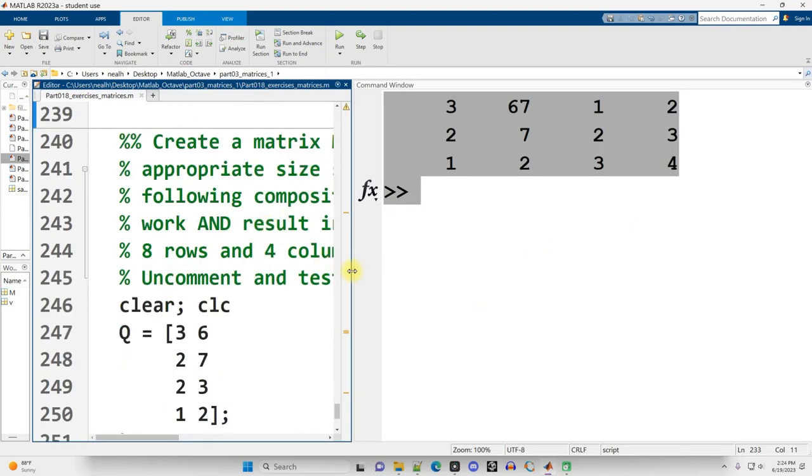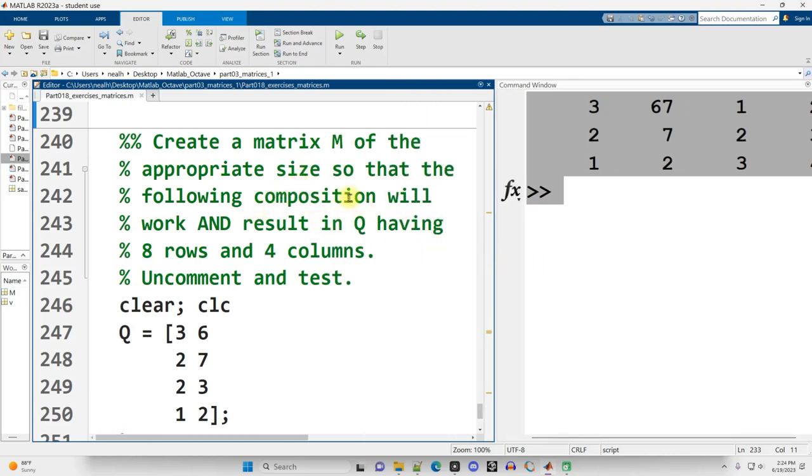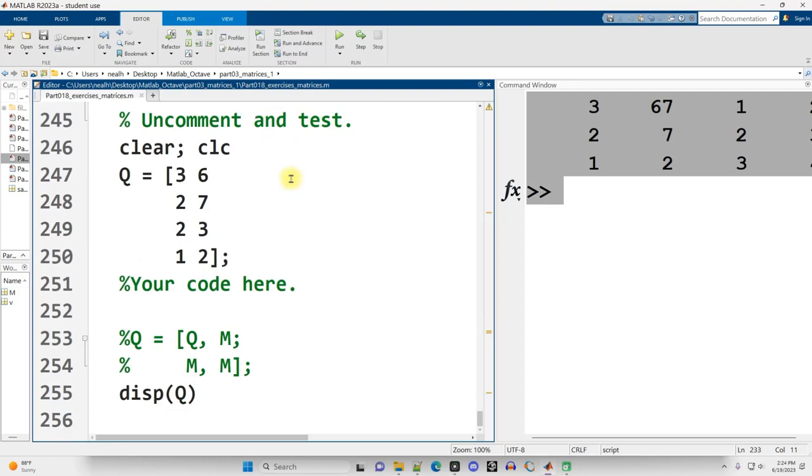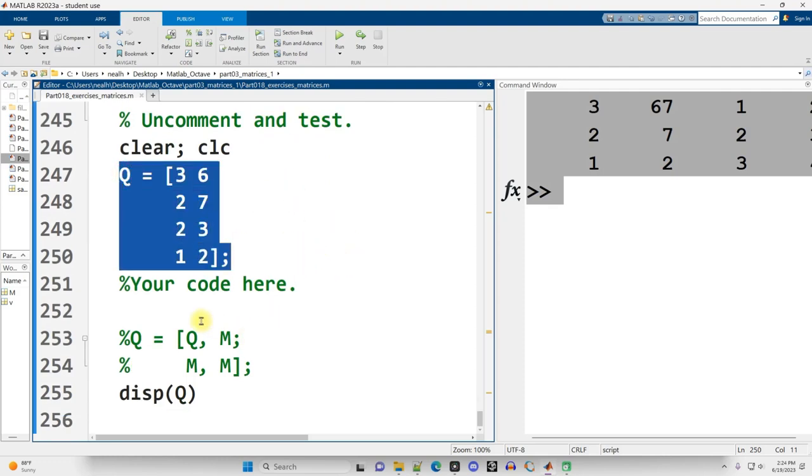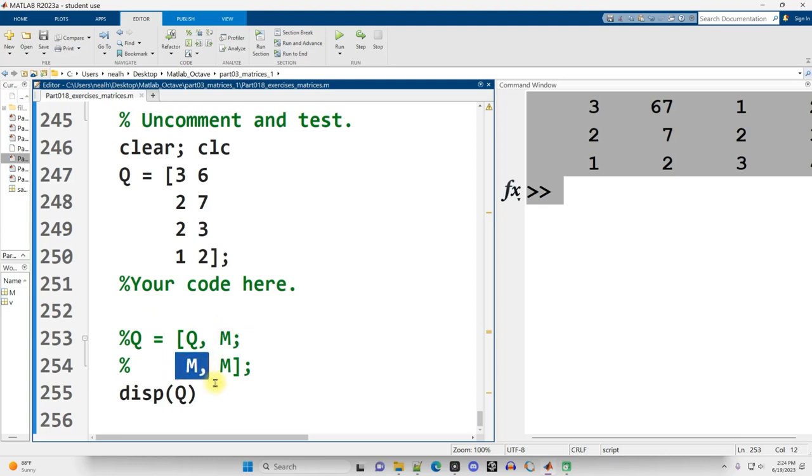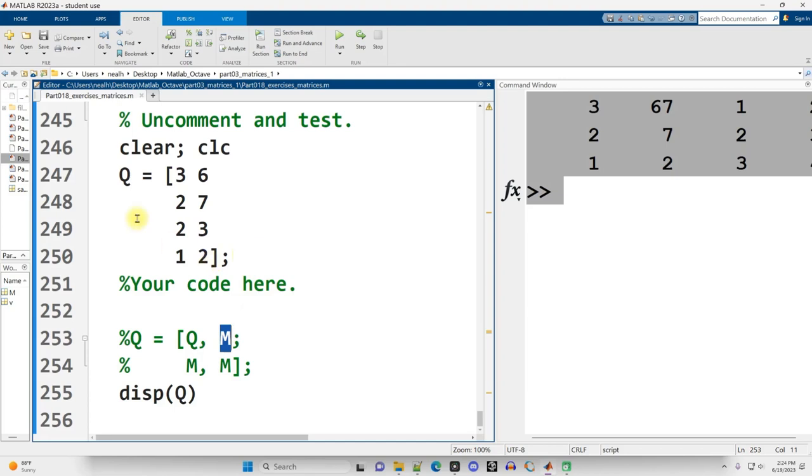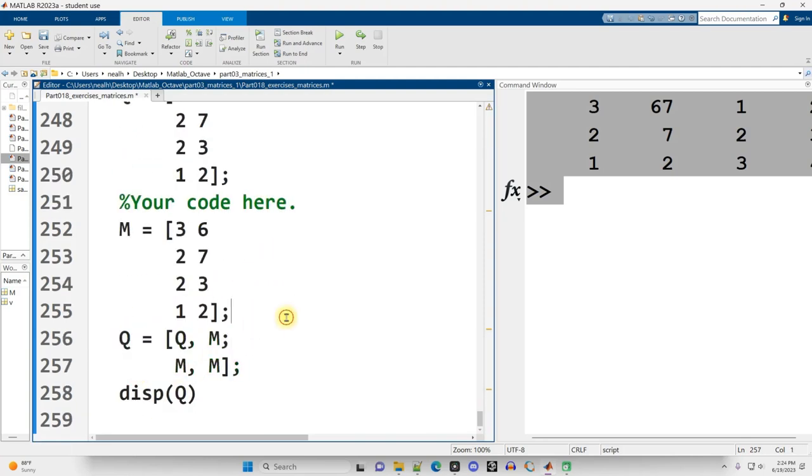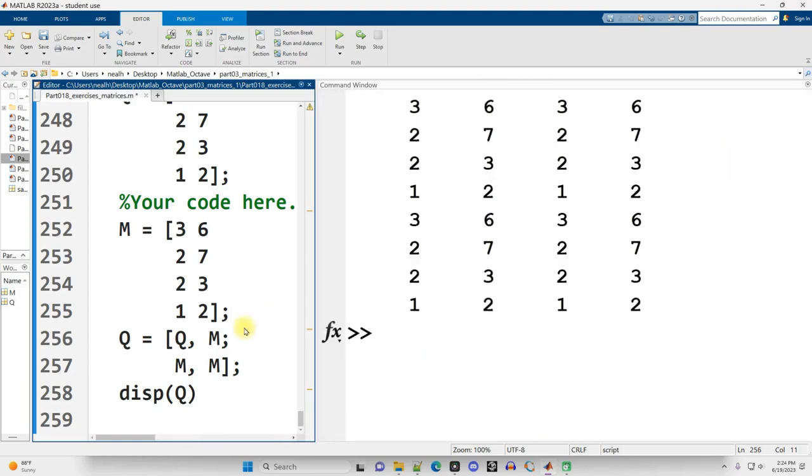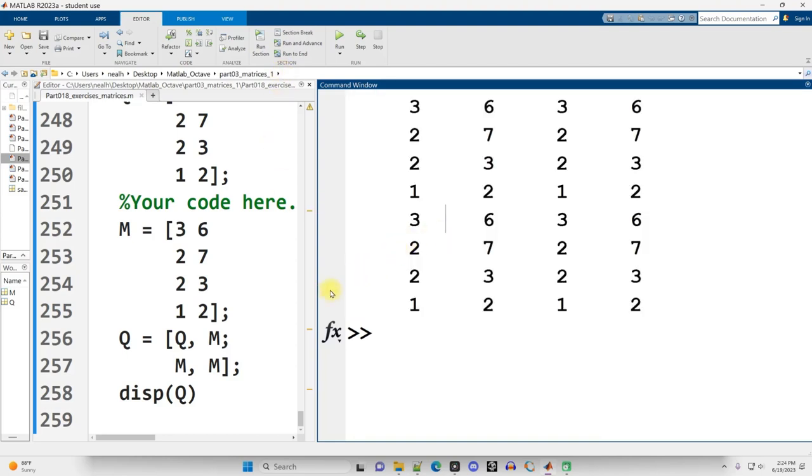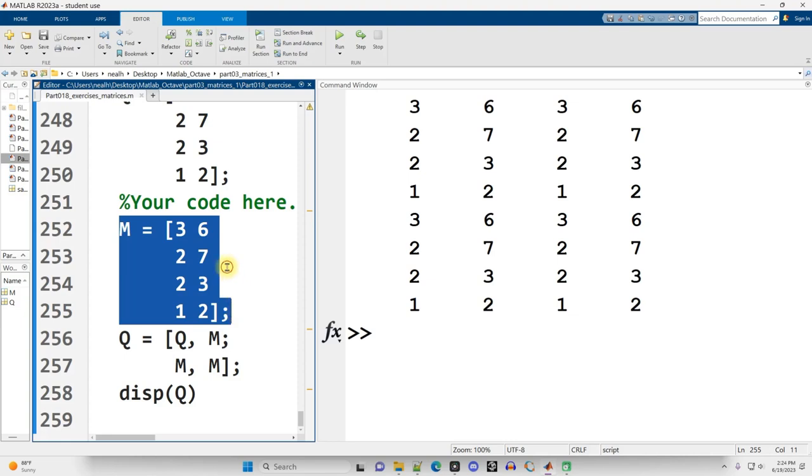Continue going on down. Create a matrix. Create a matrix M of the appropriate size so that the following composition will work and result in Q having eight rows and four columns. Uncomment and test. So this time, we've got a four by two matrix. And we want to create a matrix M that we can stack alongside and below Q to end up with an eight by four. Now, that means that we actually need M to have exactly the same dimensions as Q because we're going to need two columns plus two more to get a total of four. And we have four rows plus four more to get eight. So if I want to be really lazy, the best way to do this is to just set M equal to Q. Comment out that. And let me resize my window and try that again. And there we go.